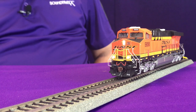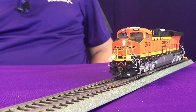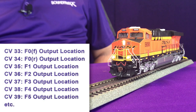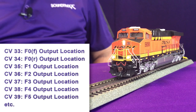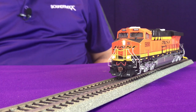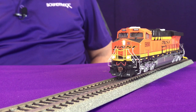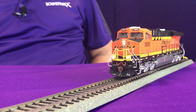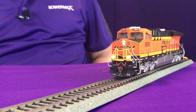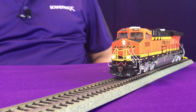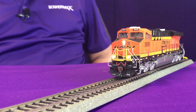Now with our original Tsunami and our current mobile decoder line, we've used the legacy NMRA function mapping in CVs 33 through 46. The problem is when you're adding extra lights and want them to be directional, the only way to accomplish this using the original function mapping is to map everything to function 0 forward or function 0 reverse, or make the headlight or backup light both non-directional by assigning them to both CVs.